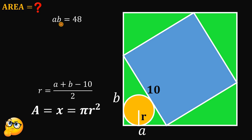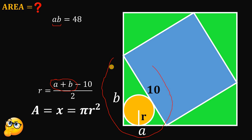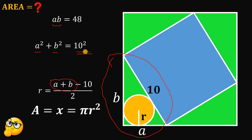We have the value for A times B, and we want A plus B. What other information do we need? Notice that we have a right triangle, so we can use the Pythagorean theorem, which says A squared plus B squared must be equal to 10 squared — the sum of the squares of the legs equals the square of the hypotenuse. So A squared plus B squared equals 100.